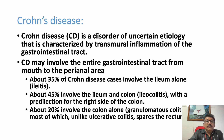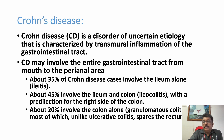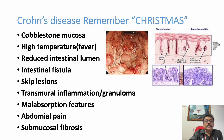About 45% involve the ileum and colon — ileocolitis. About 20% involve the colon alone — granulomatous colitis. So there are different varieties of Crohn's disease. The key point to understand is that it is a transmural inflammation of the gastrointestinal tract.